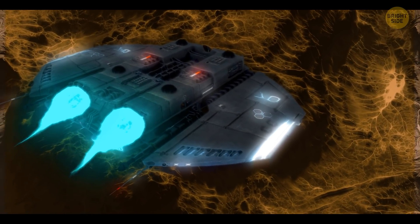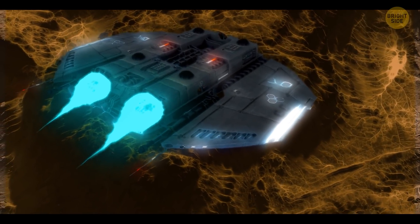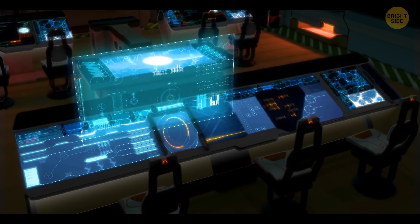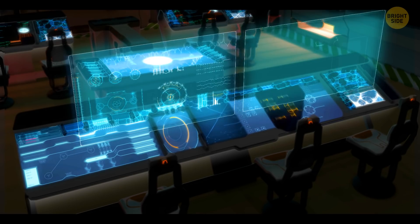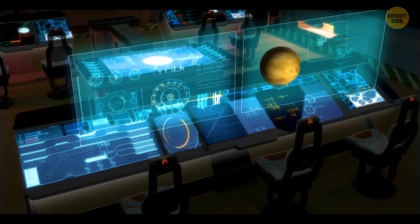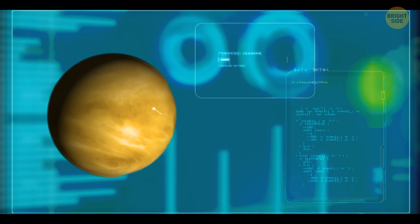This is the greenhouse effect that we try so hard to avoid on Earth. On top of that, the stellar wind carries water vapor and other elements from the upper layers of the atmosphere into outer space. Life cannot exist on such a planet, nor could it ever originate, just like on Earth's twin sister, Venus.